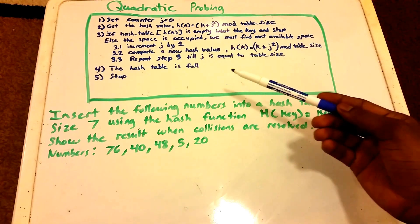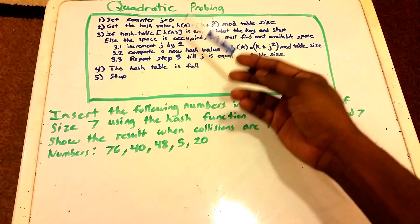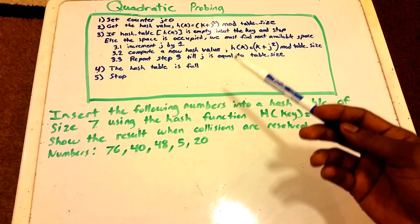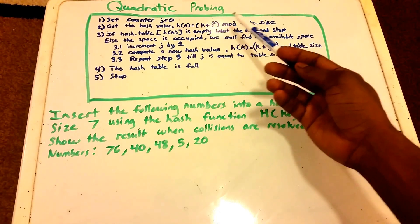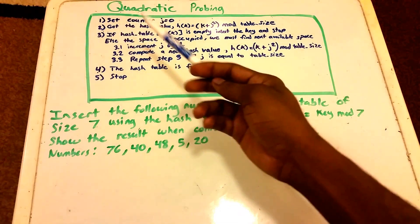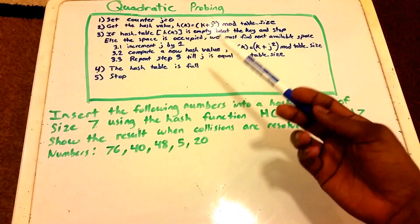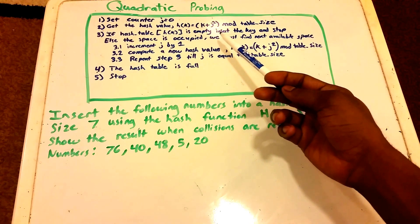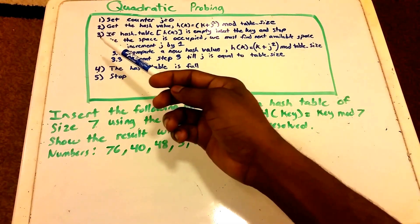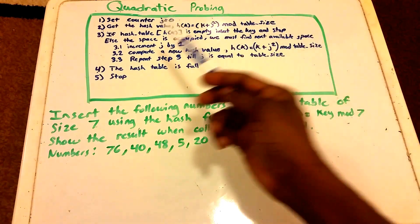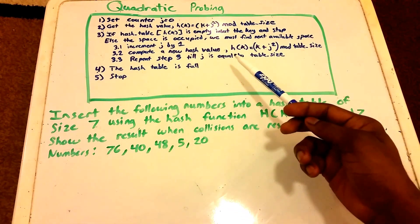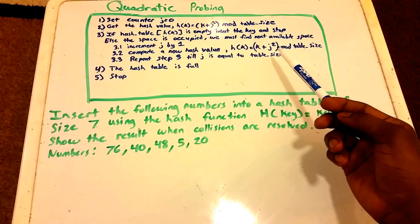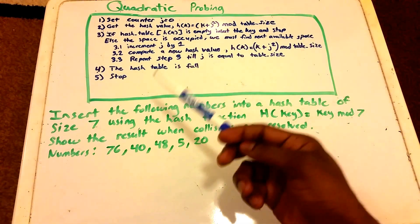Here is the algorithm. Set counter J equal to zero, then get the hash value H — our hash function — which takes in a value K, our key, and is equal to (K + J²) mod table size. If the hash table at that index H(K) is empty, we insert the key and stop. Otherwise the space is occupied and we must find the next available space, so we increment J by one, compute a new hash value using the same function H, and repeat until J equals the table size, at which point the hash table is full and we stop.